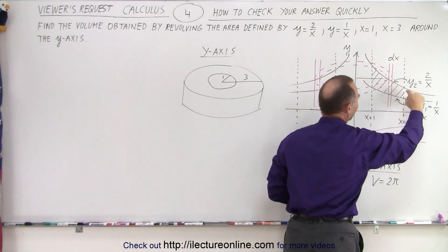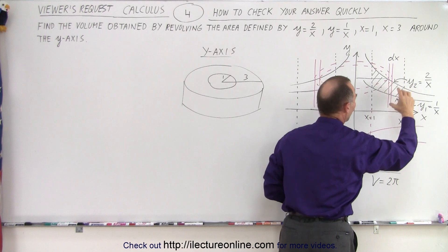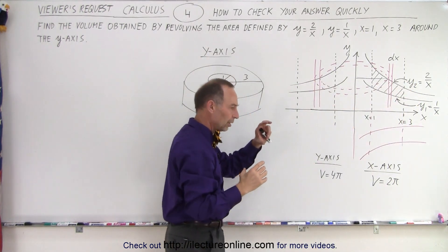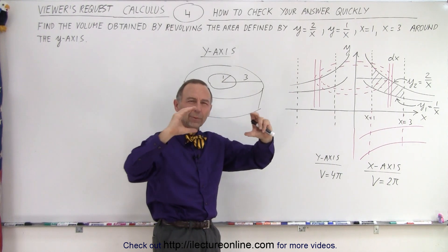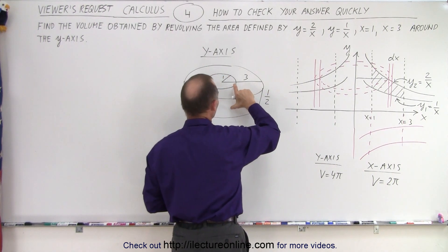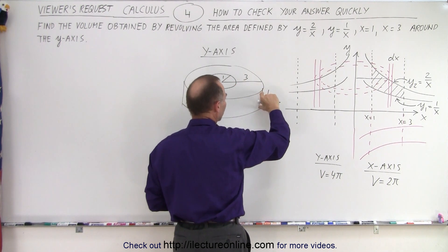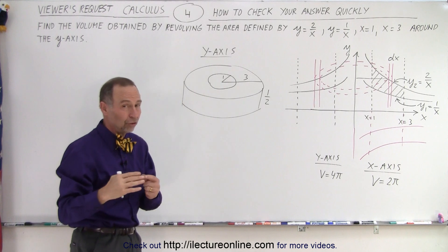And then as it goes to the outside, notice that here you get 2/3, here you get 1/3. So it would be 1/3. So the height is 1 on the inside, 1/3 on the outside. So the average height is about 1/2. About 1 on the inside and 1/3 on the outside averages out to about 1/2. Again, these are just approximations.